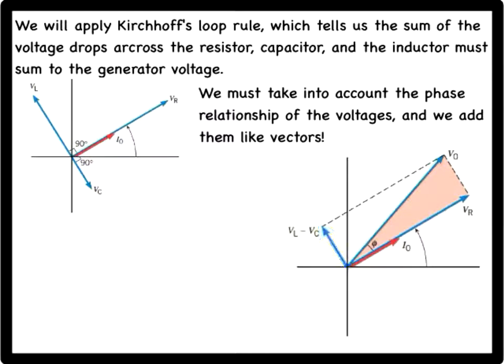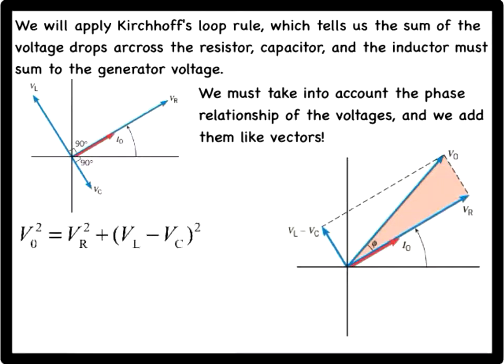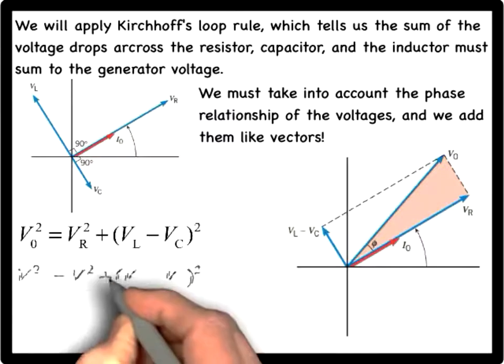The total voltage is then given by the vector sum of VL minus VC plus VR, as the figure shows. Since these two vectors are perpendicular to each other, their vector sum is given by the Pythagorean theorem. Each of these symbols represents the maximum voltage. We can divide each side by the square root of two to find an expression for the total RMS voltage of the circuit.